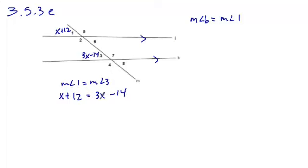To solve this, we'll move all the x's to one side by subtracting x from both sides of the equation. Then move the constants to the other side and solve. We get x equals 13.